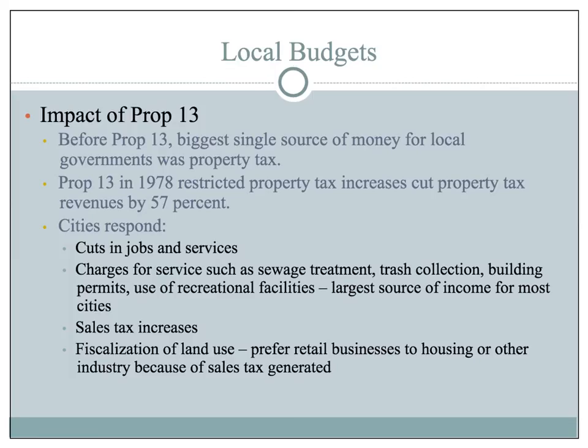We talked about Prop 13 briefly in the last chapter. Before Prop 13, the biggest source of money for local governments was the property tax. But Prop 13 restricted property taxes, and cities responded by cutting jobs and services, charging for a number of services, increasing sales tax, and going to what is called the fiscalization of land use — where they prefer retail businesses to housing or other industry because of the sales tax that is generated.